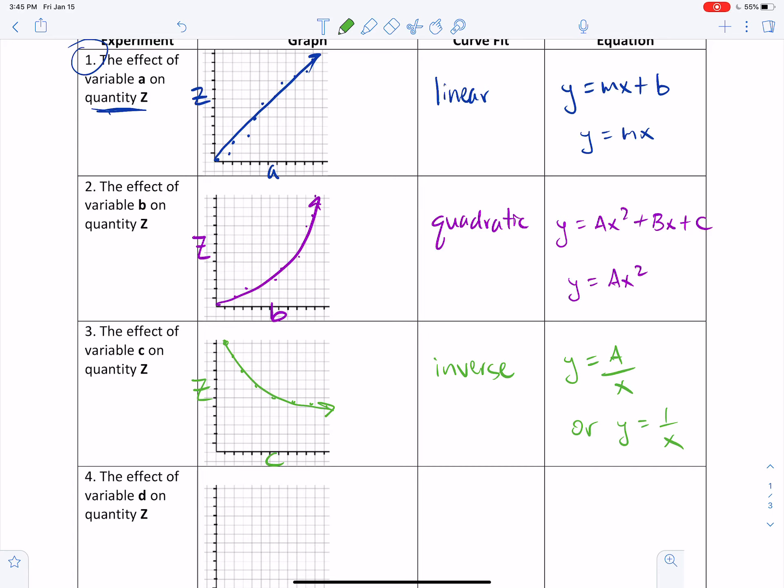Now, by the way, what if you actually got this instead? As you increase the value, it formed a straight line like this. That would not be an inverse relationship. That would just be another linear relationship with the equation y equals mx plus b. So just because the graph is going down and to the right doesn't mean that it's an inverse relationship.